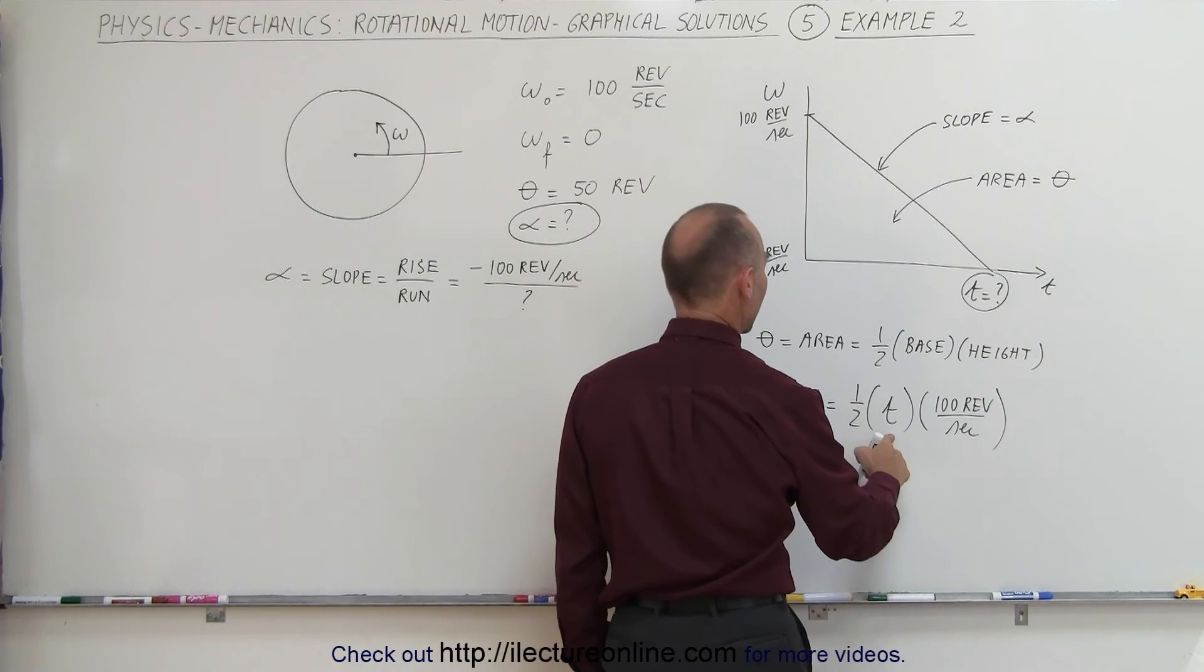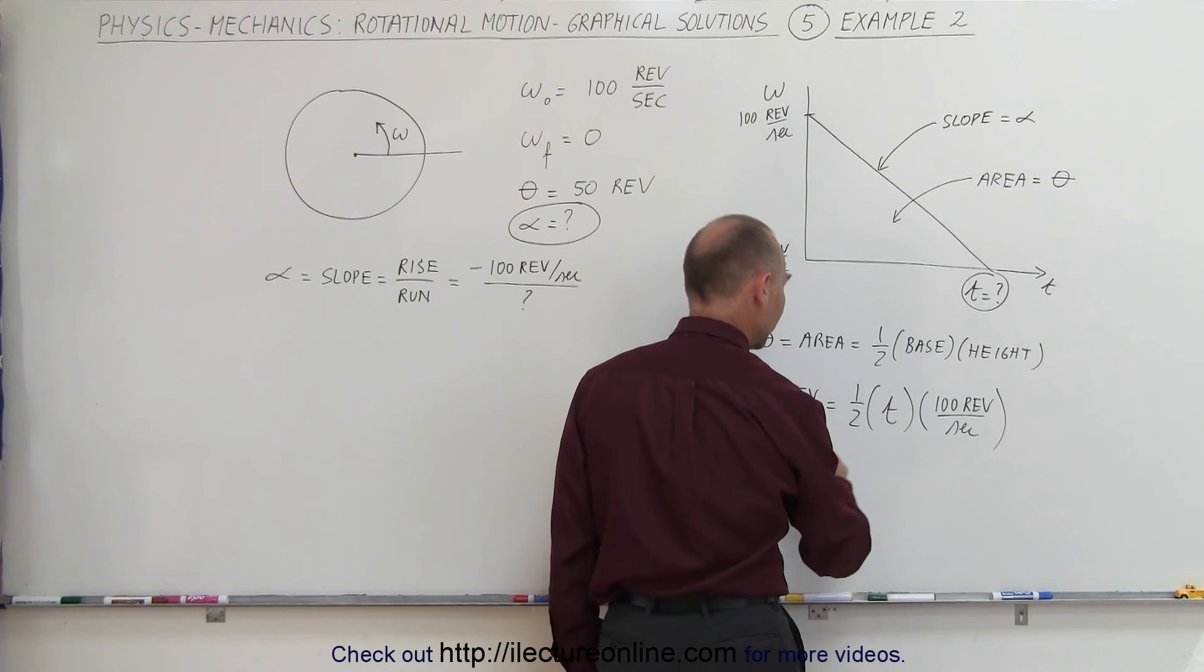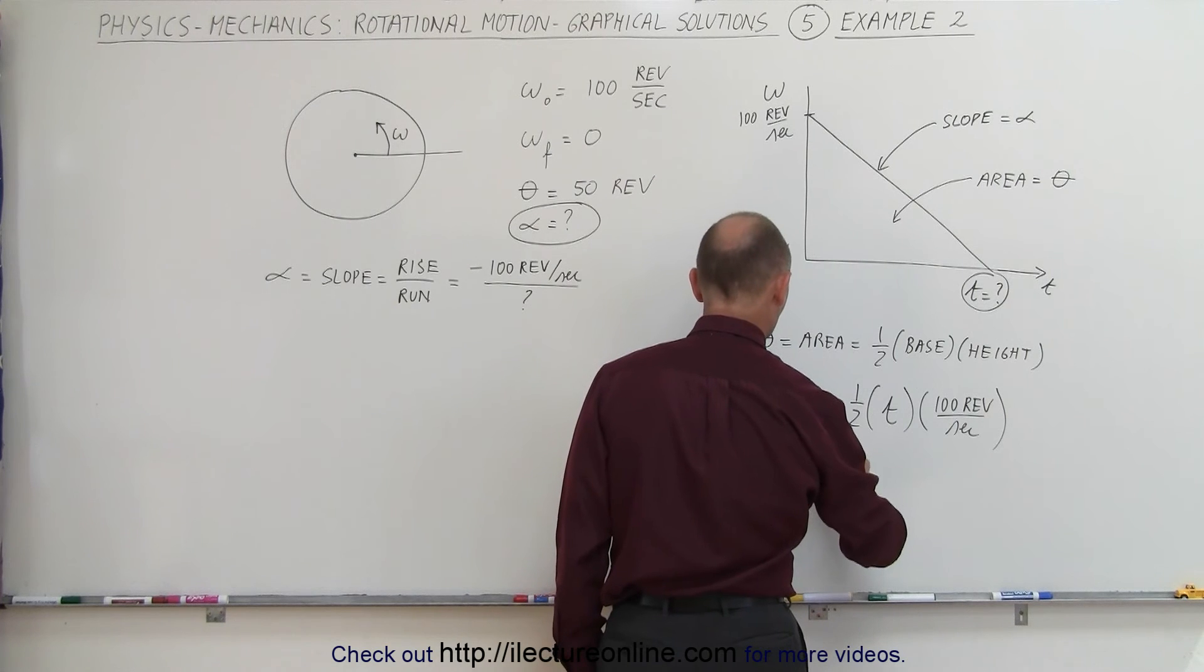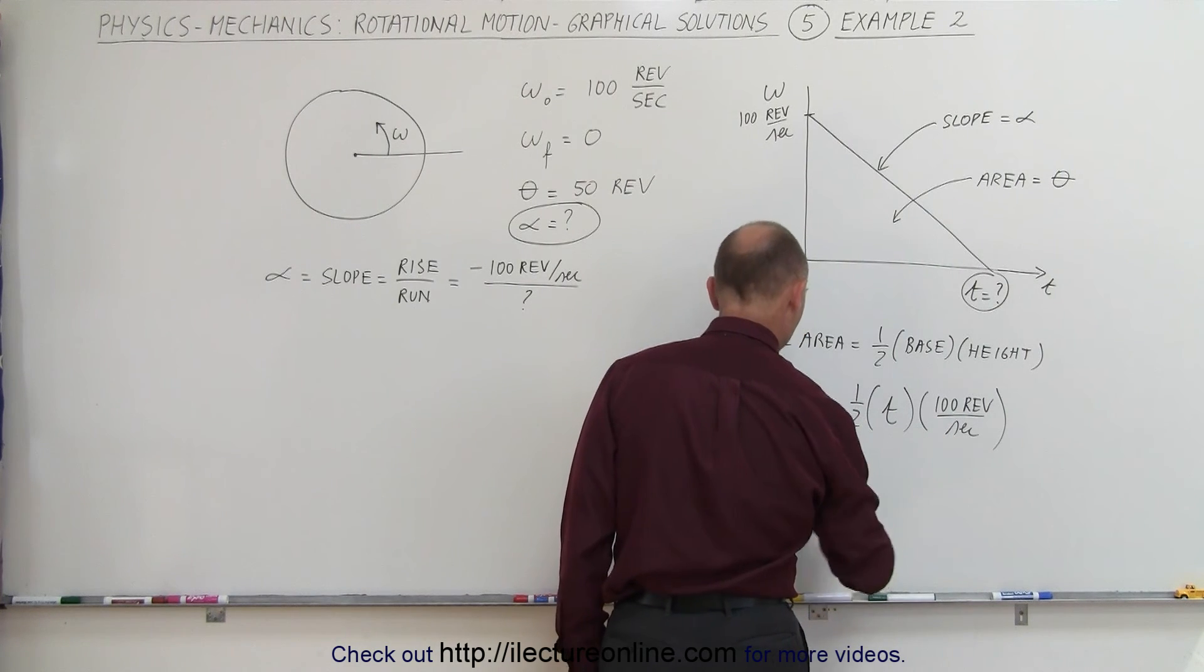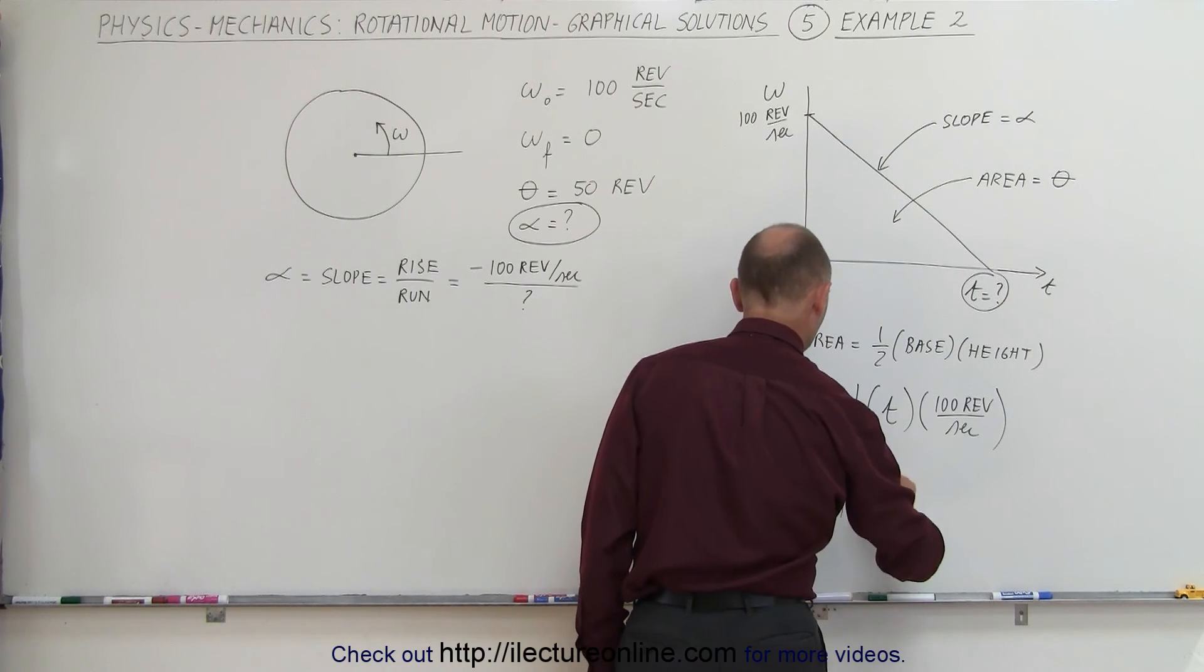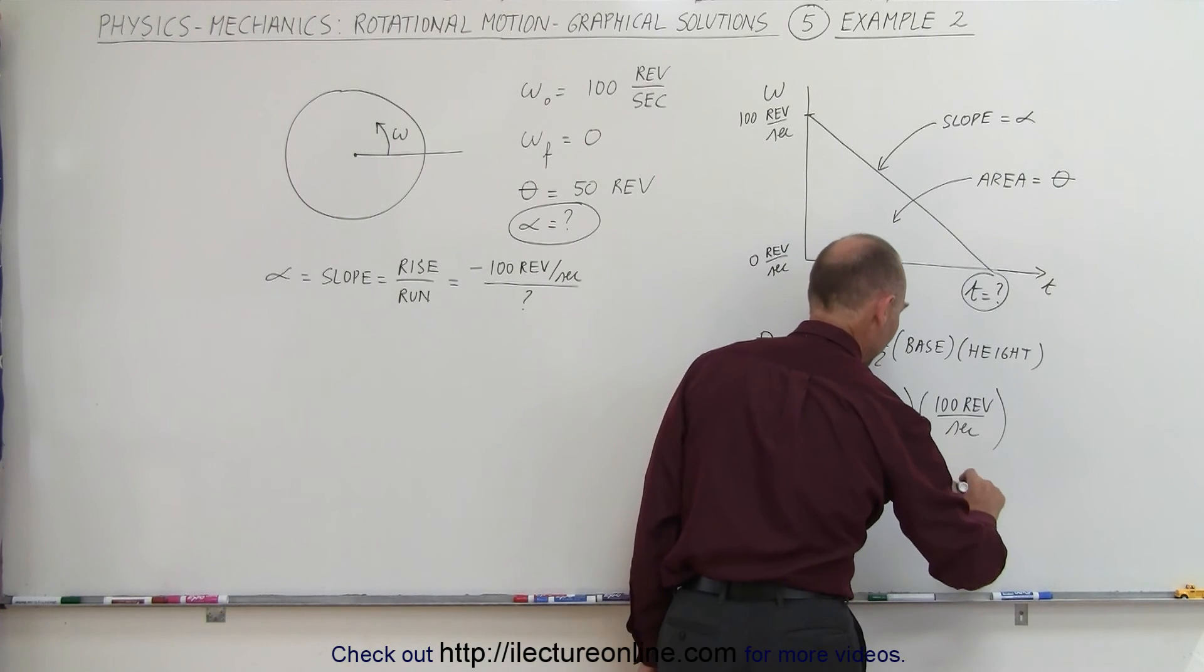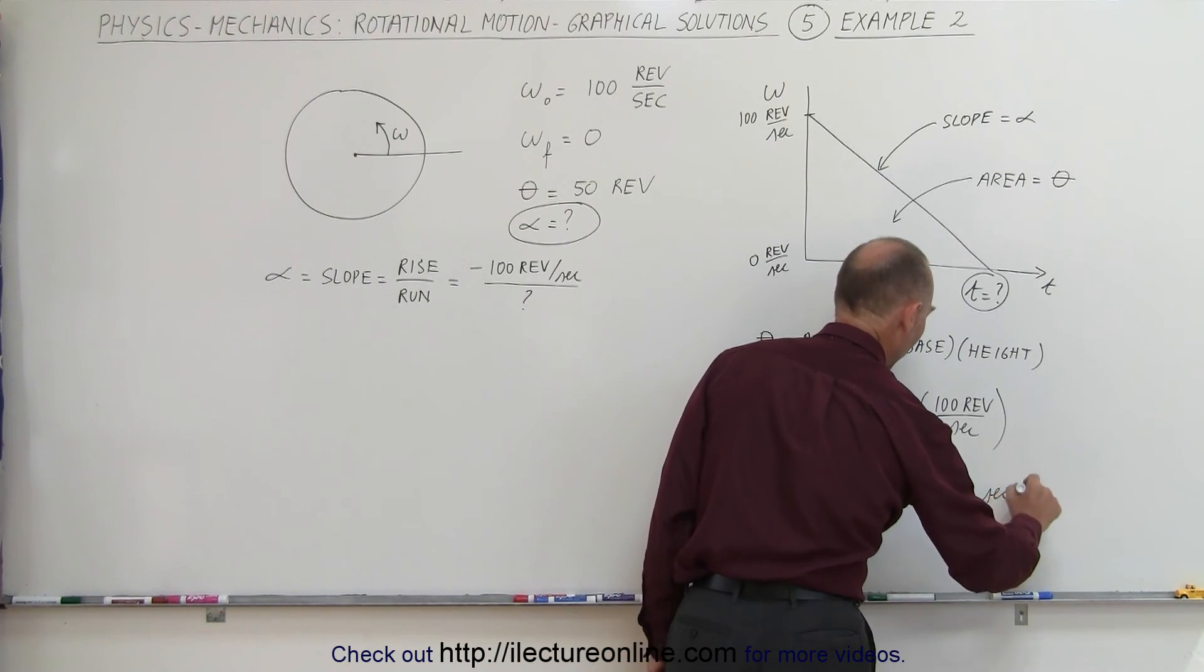Solving this for time, notice we can put the 2 over there, we can put 100 revolutions per second over here. That means we get 50 revolutions times 2 divided by 100 revolutions per second equals time. If we work that out, we get time is exactly equal to one-half second.